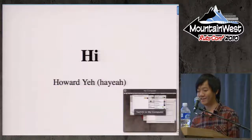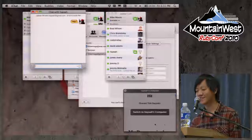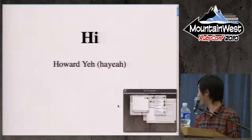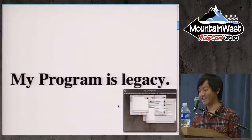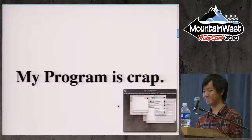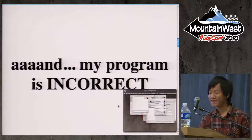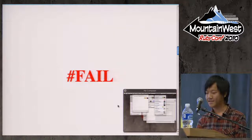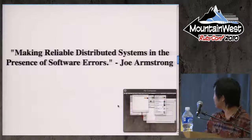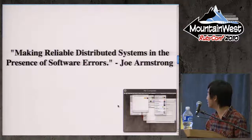Hi, my name's Howard. This is my first conference ever and my first talk. I have issues: my program is slow, my program is legacy, my program is crap, and my program is incorrect. How do we manage all these? 'Making Reliable Distributed Systems in the Presence of Software Errors' — this is the PhD thesis of Joe Armstrong, the co-inventor of Erlang. He talks about how it's unavoidable to have errors within your system, but you still need to derive reliable software from this bowl of mud.